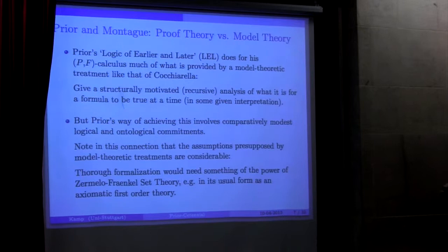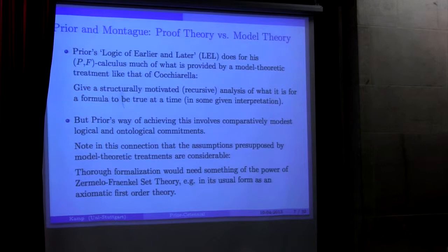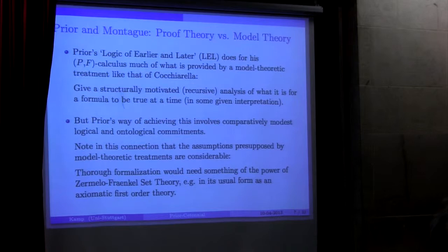When Prior came to UCLA, some of us have just heard a talk on this very topic, but some of you haven't—he came into a community where tense logic had become a subject for investigation by model theoretic means. In particular, Nino Cocchiarella, a student of Montague, had just finished his dissertation. He had already left Los Angeles and taken a post in San Francisco, and his dissertation was examined during the time that Prior was in Los Angeles at UCLA.